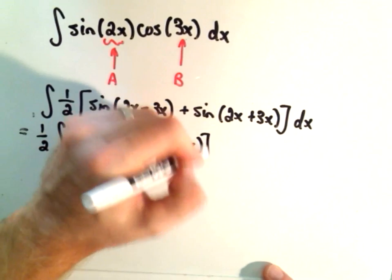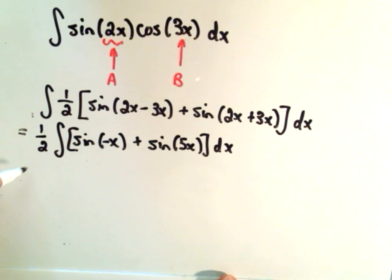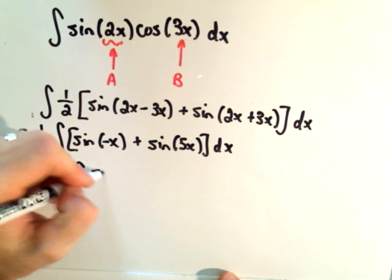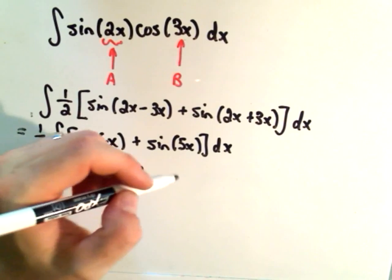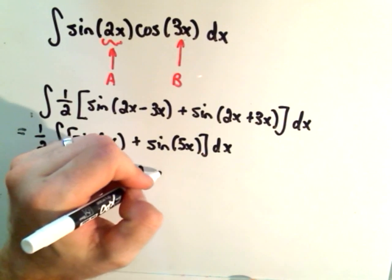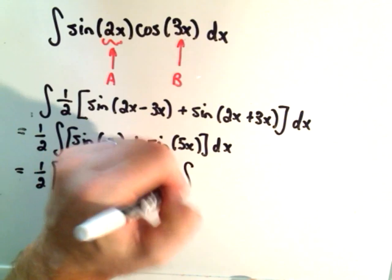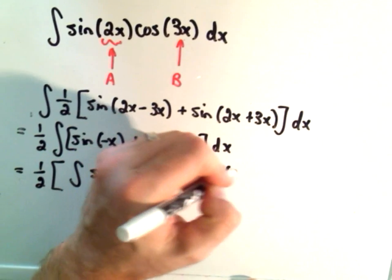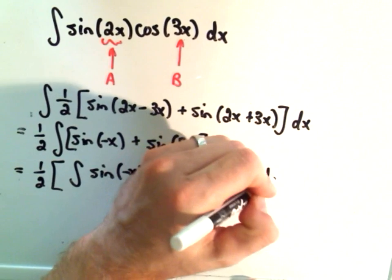dx. Now you would just integrate these basically separately. You would integrate sine of negative x by doing a u substitution. Likewise, you would integrate sine of 5x by just doing a u substitution.